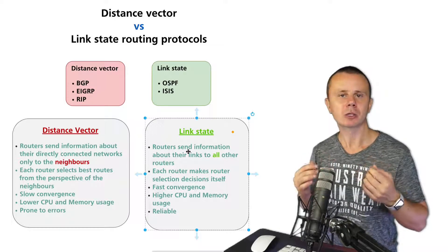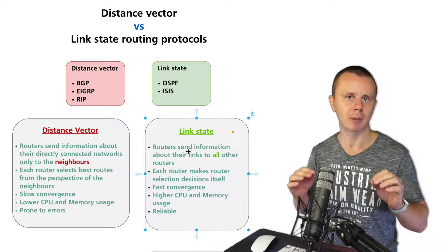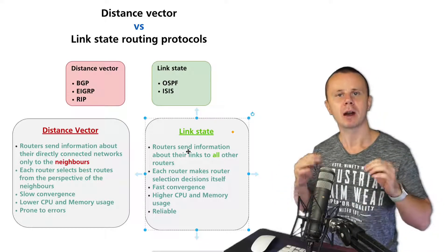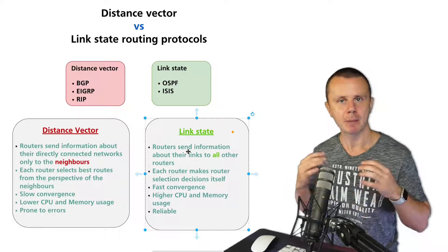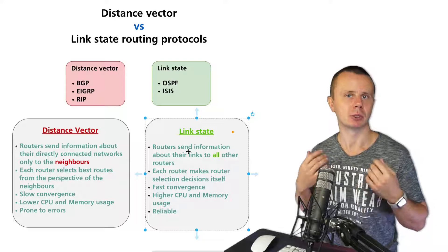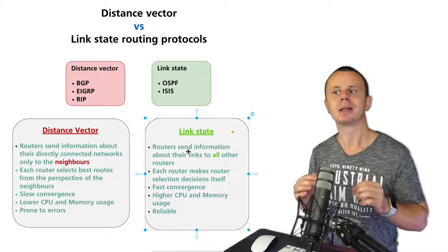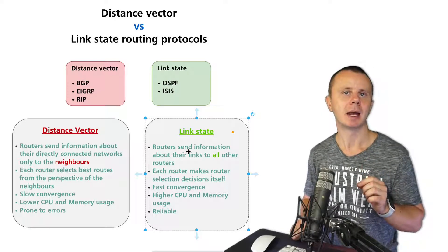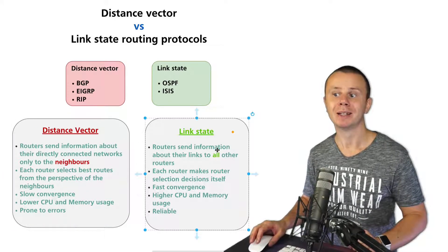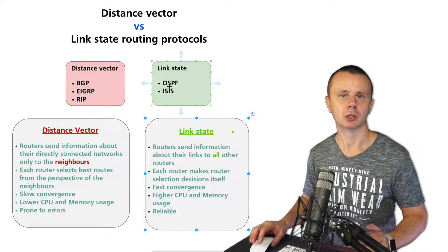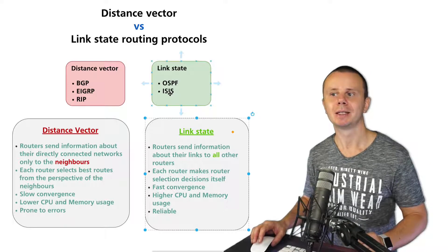Convergence in link state protocols is much faster because when a network goes down, the router sends a small update to all neighbors, which replicate it quickly throughout the network. However, since routers keep all link details in memory and perform computations locally, they require higher CPU and memory resources. Link state routing protocols are very reliable and less prone to routing errors. The most popular link state routing protocol is OSPF — it is open standard and available on routers from any vendor. IS-IS is also a solid protocol but did not become as widely adopted.